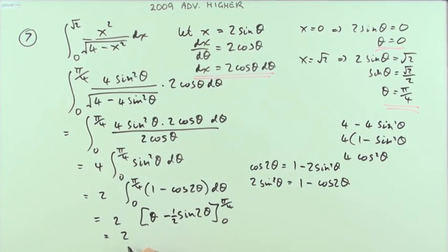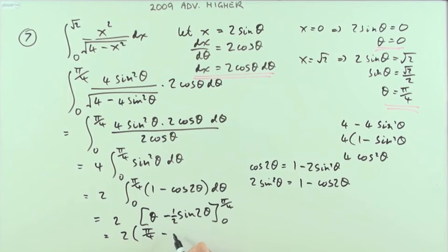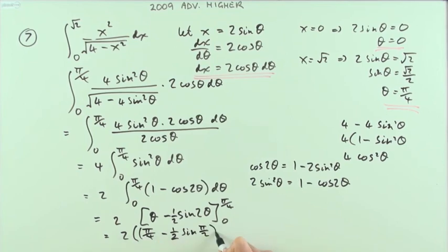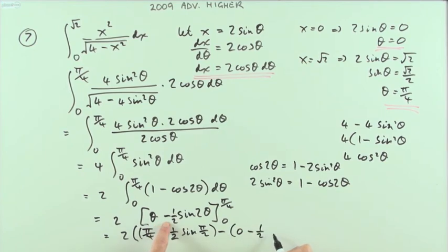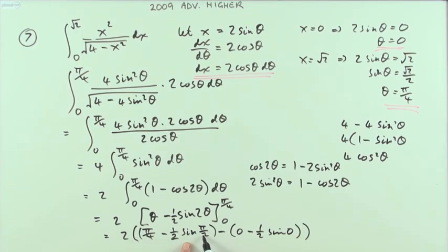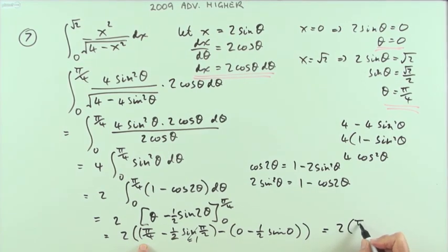Almost there. Two times: evaluated at π/4 gives π/4 minus one half sine of two times π/4, which is π/2. Minus the value at zero: zero minus one half sine zero — that whole part goes to zero. So I'm left with two times (π/4 minus one half). Since sin(π/2) equals one, that simplifies to two times (π/4 minus one half).